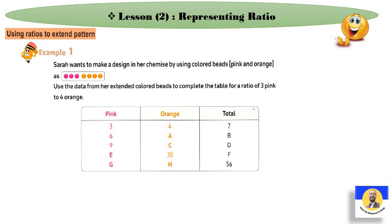Sarah wants to make a design in her room using colored beads, pink and orange. For every three pink beads, she uses four orange beads. So the ratio is 3 to 4. Use this ratio of three pink to four orange to complete the table. In the first row we used 3 to 4, and the total is 3 plus 4 equals 7.